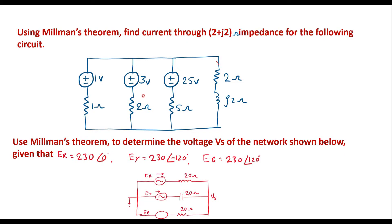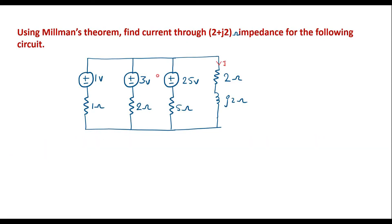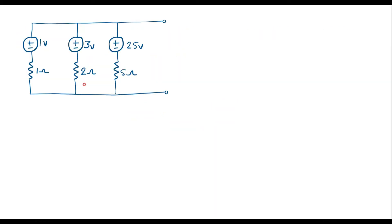Let me consider the first example. In Millman's theorem, the branch in which we are finding the current must be removed from the circuit. So the first step is to remove the 2+J2 branch from the circuit, keeping the remaining elements as they are. The circuit then looks like this.